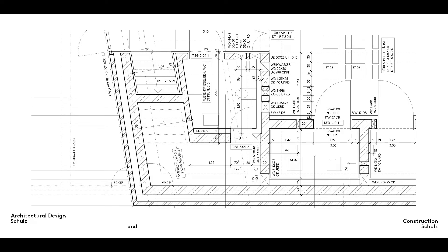Construction drawings are a means of communication. They give instructions which must be clear, precise and unambiguous, leaving no questions unanswered. The same principle applies to road traffic signs and the rules governing how a sport is played, for example. The clarity and precision of a construction drawing depend on the information it contains being well organised and easy to locate and understand. A poor construction drawing is like a person who talks endlessly without ever coming to the point.